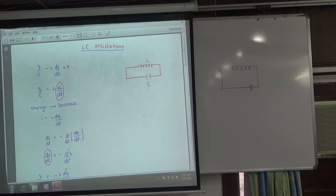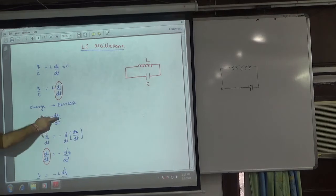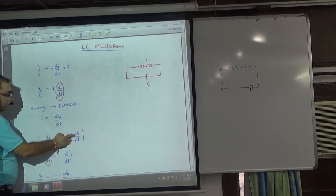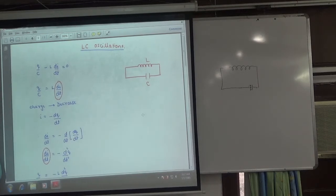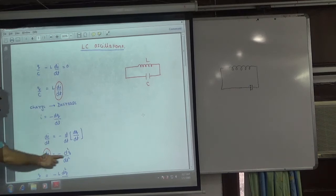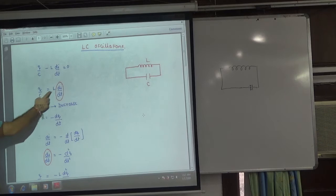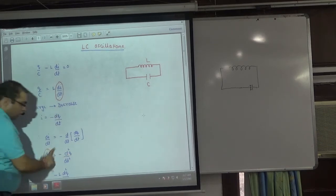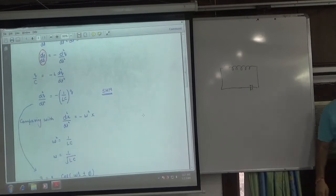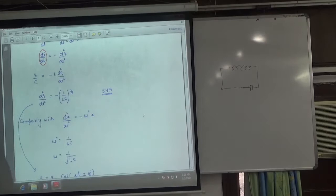Matter of fact, we put this given value to the value of i. Minus DQ by dt. That's the double derivative, d2q by dt square. So q by c is equal to l into minus dq d2q by dt square.